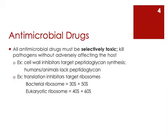Another example is the class of antimicrobials called translation inhibitors. They target a particular form of a ribosome — specifically the bacterial form. They target the 30S small subunit and the 50S large subunit of the bacterial ribosome. These drugs don't harm human ribosomes because our ribosomes are just different enough: we have a 40S small subunit and a 60S large subunit. Selective toxicity.